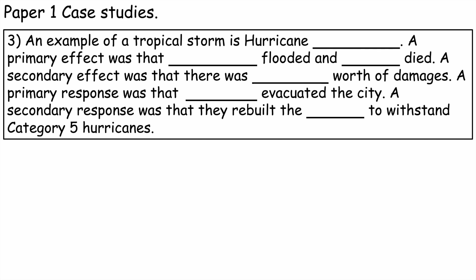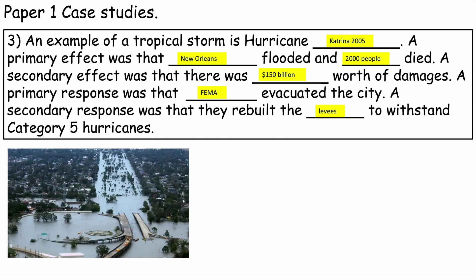Number three: an example of a tropical storm is Hurricane Katrina, 2005. A primary effect was that New Orleans flooded and around 2,000 people died. A secondary effect was that there was $150 billion worth of damages. A primary response was that FEMA — the Federal Emergency Management Agency — evacuated the city. A secondary response was that they rebuilt the levees, which are artificial walls next to the river channel, to withstand category 5 hurricanes. Here we can see New Orleans underwater.